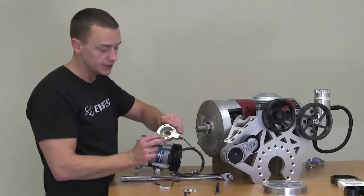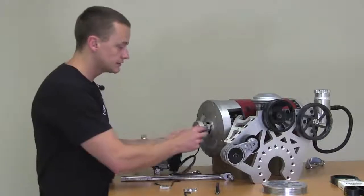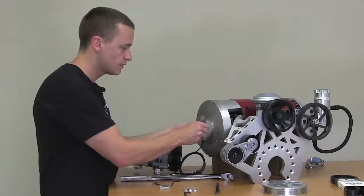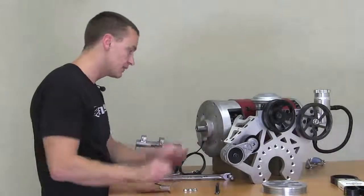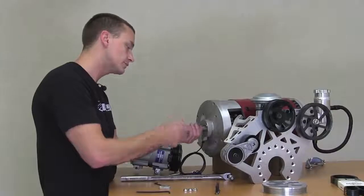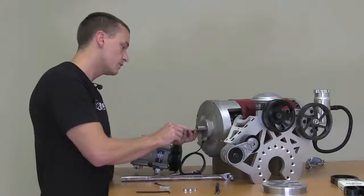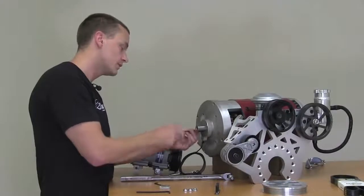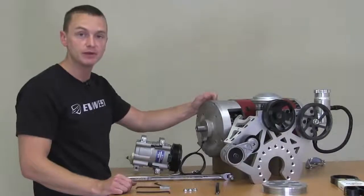This is the cover plate here. This has got our proximity sensor inside. This just bolts right up here to the front. Really nice clean installation. We're going to go ahead and just snug these down. So from this point, we're pretty much ready to install the accessory plate on there.